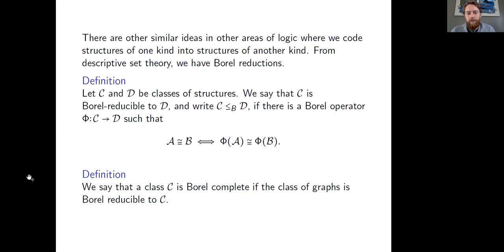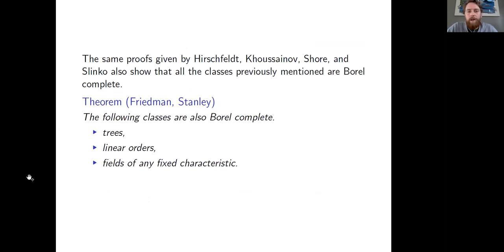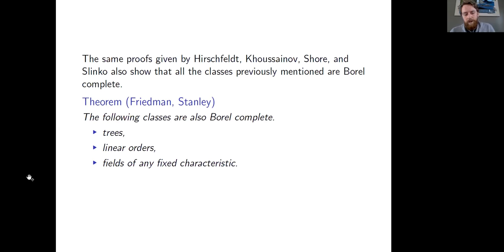A class is Borel complete if the class of graphs is Borel reducible to it. Because graphs are universal in this sense, that means any class of structures is Borel reducible to C if C is Borel complete — meaning the isomorphism relation in C is as complicated as possible. The same proofs that Hirschfeld, Kussain, Shor, and Slinko gave for those universal classes also proved they're Borel complete. Friedman and Stanley, in their paper introducing Borel reductions, showed trees, linear orders, and fields of any fixed characteristic are also Borel complete.